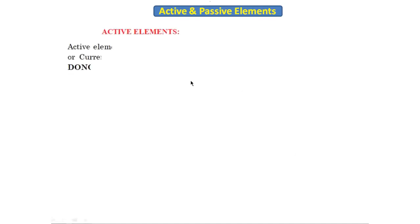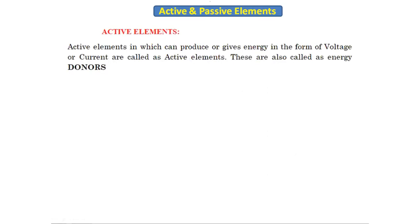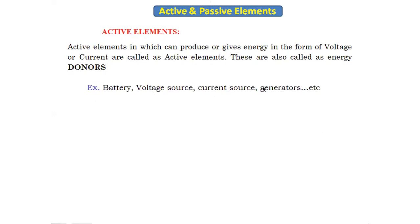Today we are going to discuss active and passive elements. Active elements are elements which can give energy in the form of voltage and current. They are also called energy donors because they give energy. Examples of active elements include the battery, voltage source, current source, and generator.